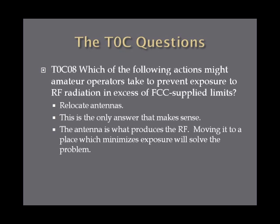Which of the following actions might amateur operators take to prevent exposure to RF radiation in excess of FCC supplied limits? The answer is to relocate the antenna. The antenna is what produces the RF, and if you move it to another place which minimizes exposure, that would solve the problem — at least on the exam, that solves the problem.